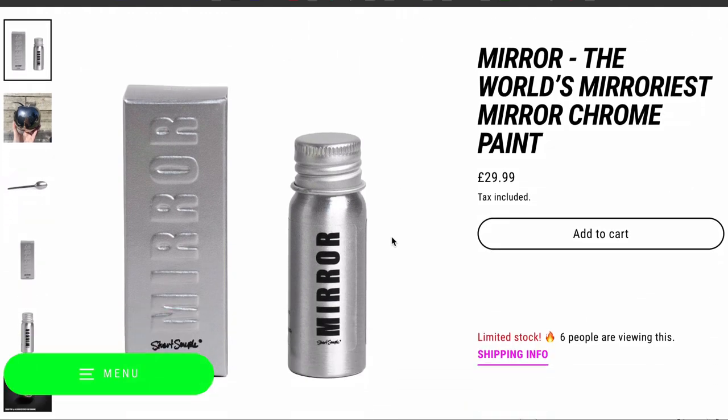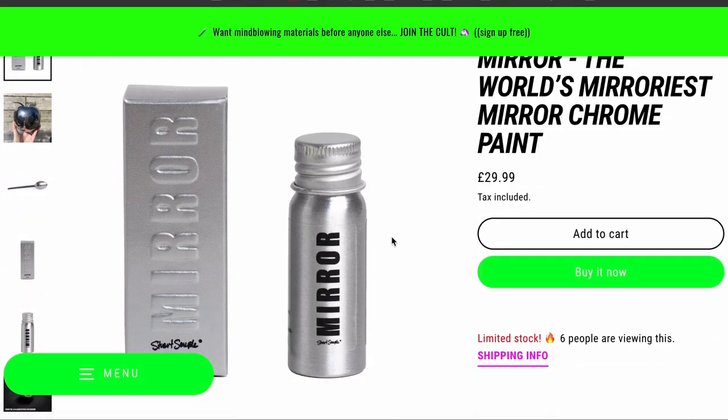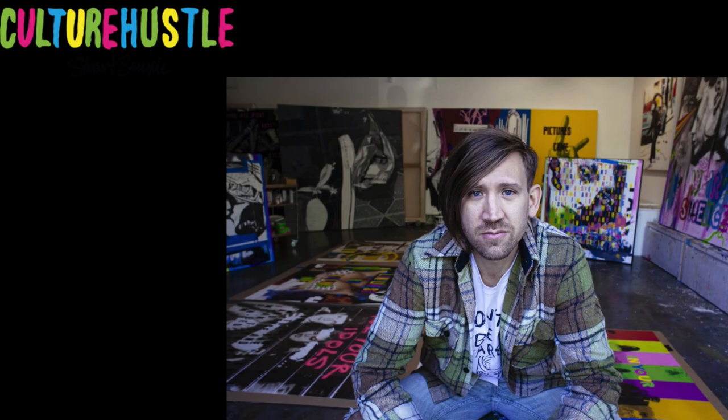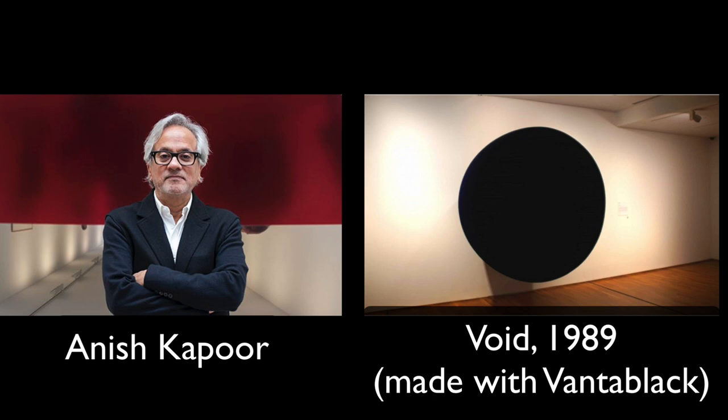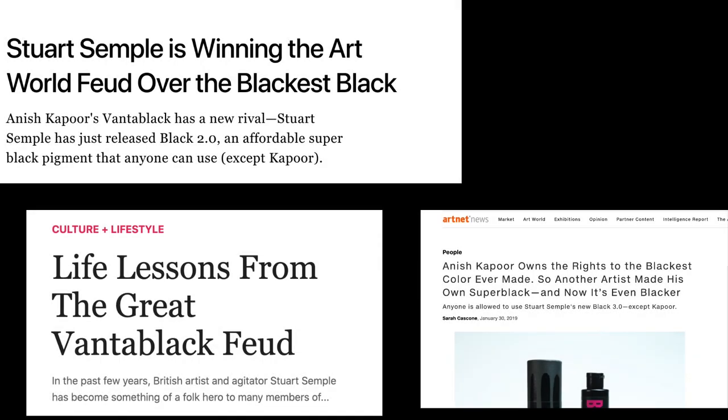So if you don't know Stuart Semple, he's an artist who is creating pigment and paint for the artist community. He has started a war against Anish Kapoor who has copyrighted some pigment and some paint, noticeably the black paint called Vanta Black.